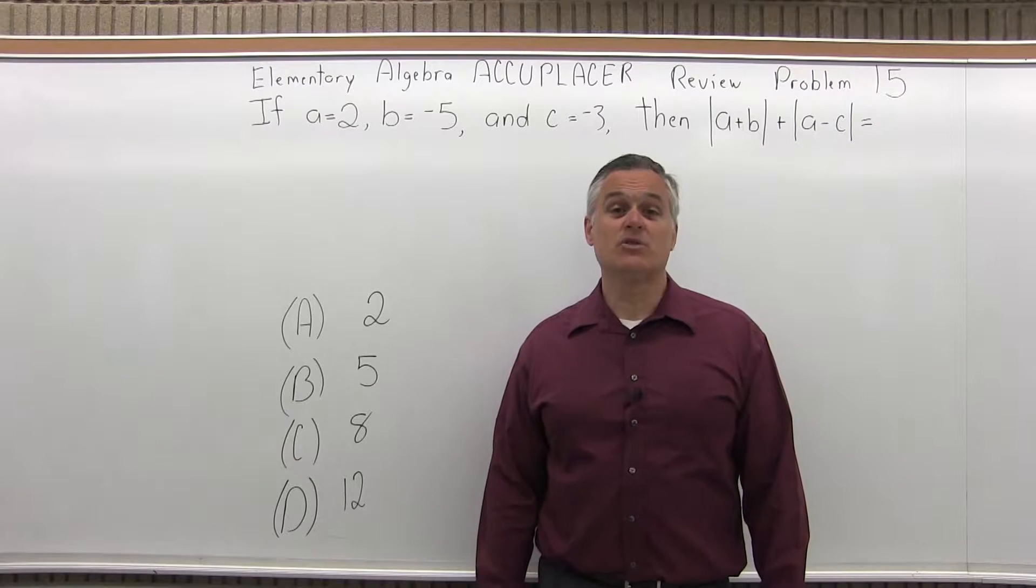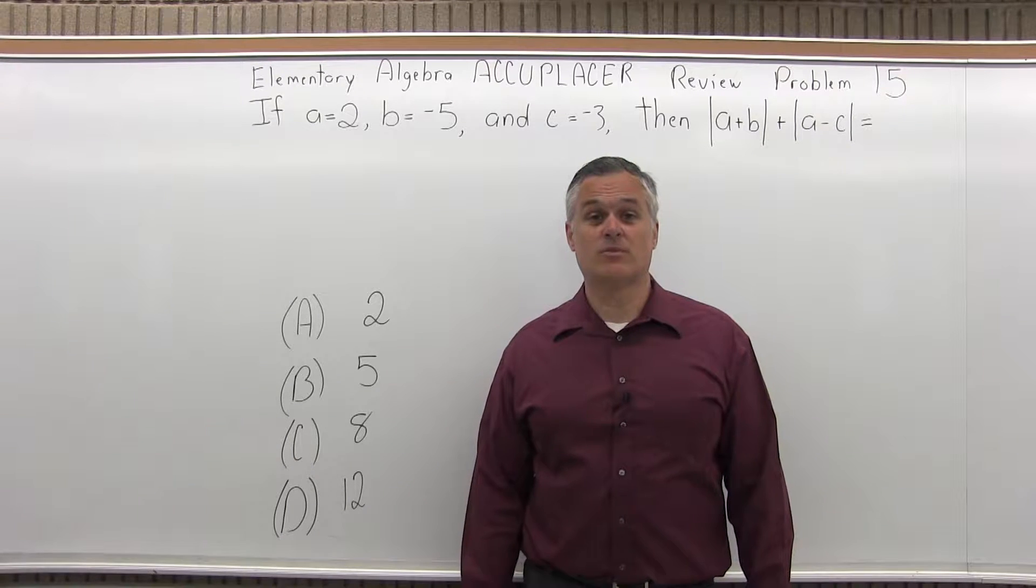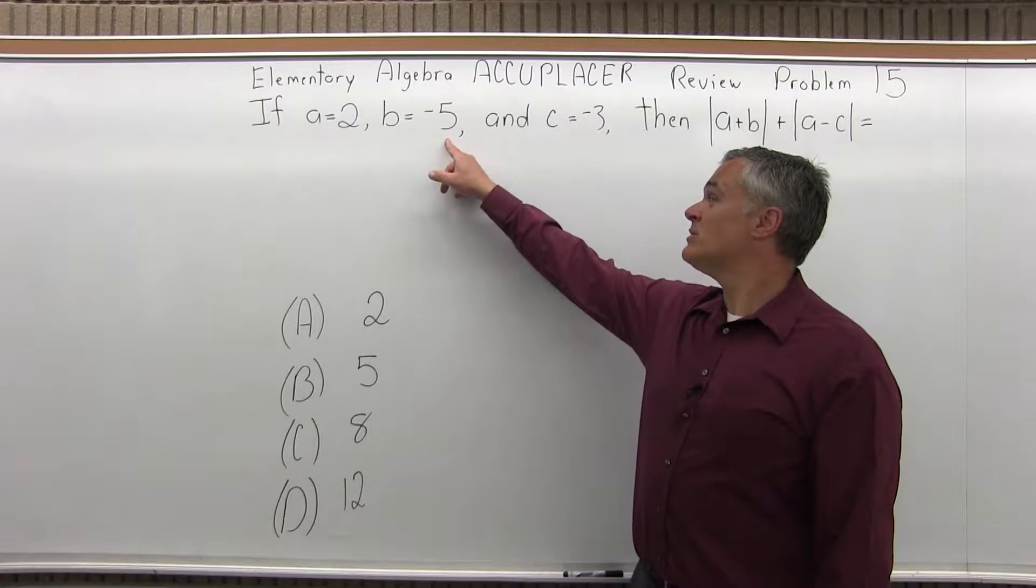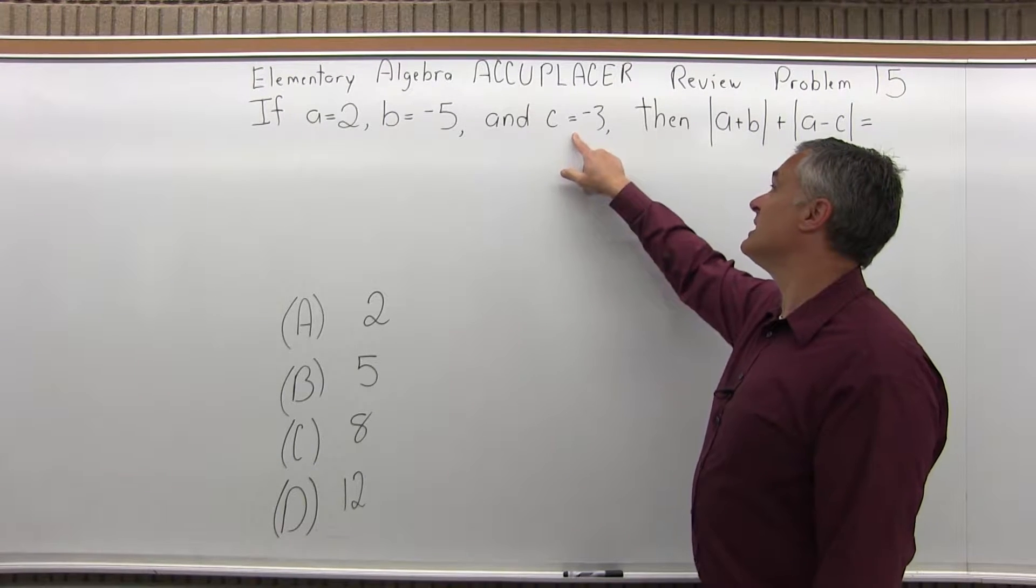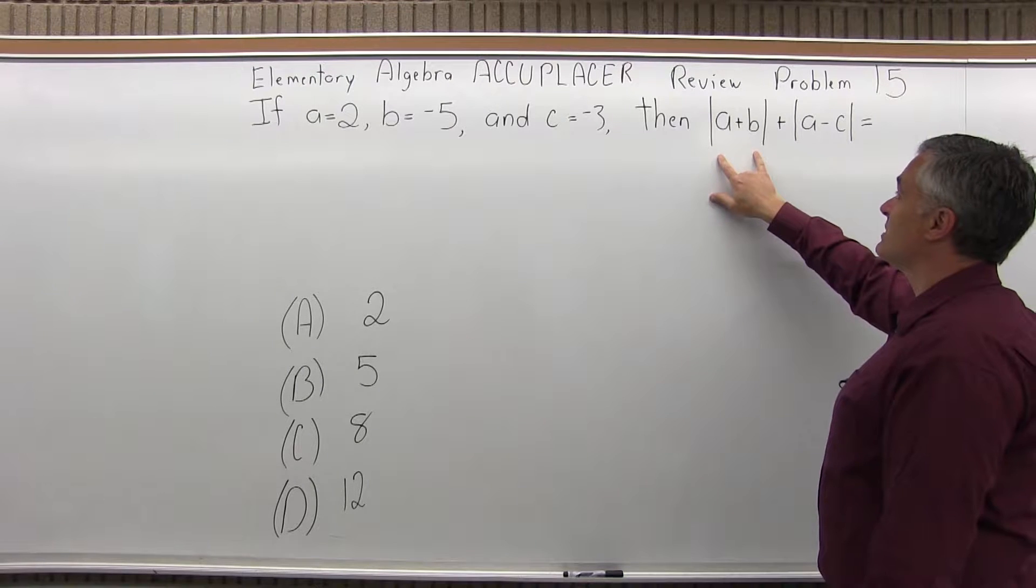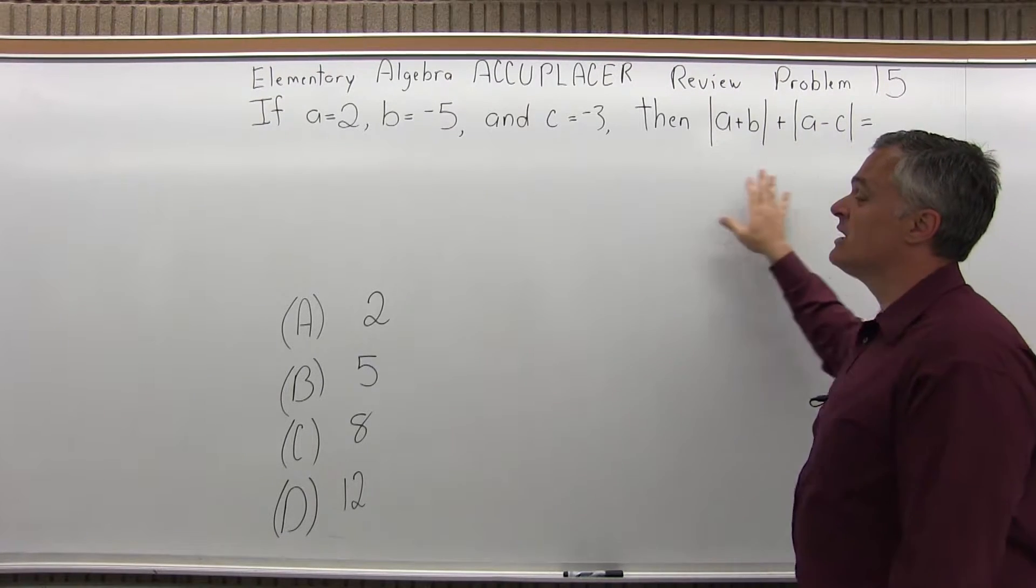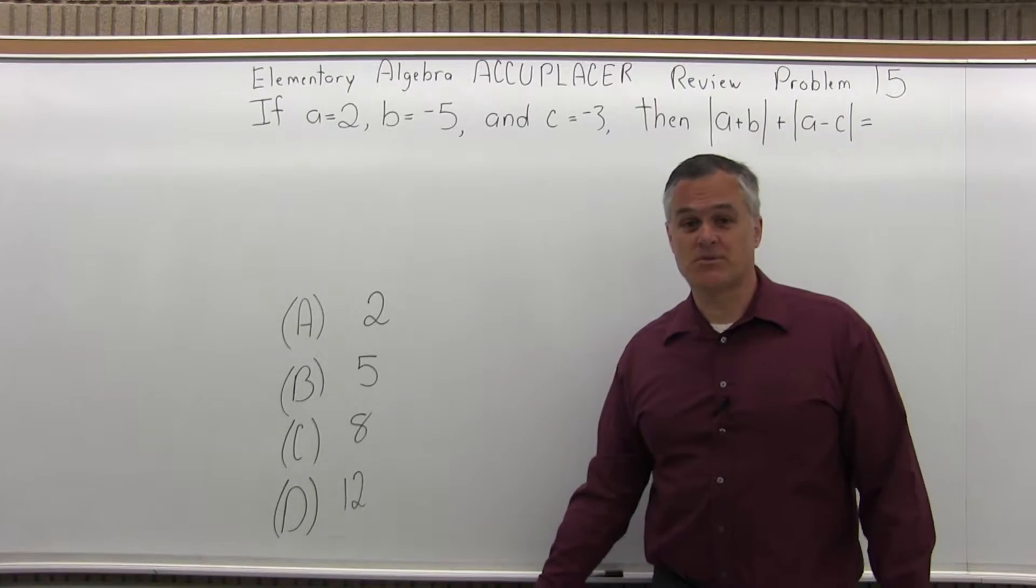This is the Elementary Algebra Accuplacer Review, Problem 15. It says if A equals 2, B equals negative 5, and C equals negative 3, then the absolute value of A plus B plus the absolute value of A minus C equals which one of four possible options?